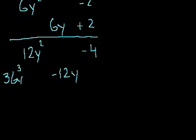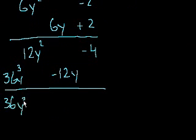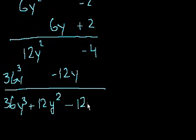So we have our answer. It is, you just add them up. 36y to the third plus 12y squared minus 12y minus 4. And that is choice D. And you could do this in your head. And that's a good thing to practice. But I just wanted to make sure it was clean when I did it.